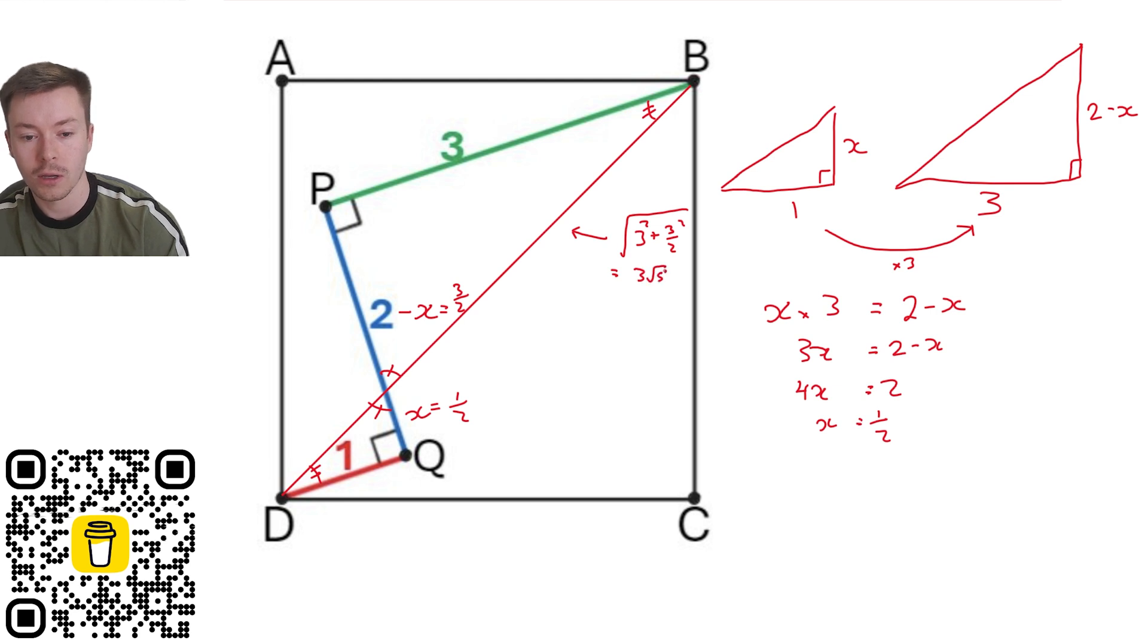Now it's always best to leave it in an exact form until we've got to our final answer. And if we do the same here, so this side here is going to be 1 squared add a half squared and square root it. And that leaves us with root 5 over 2. Just we'll double check quickly. Yep, root 5 over 2.